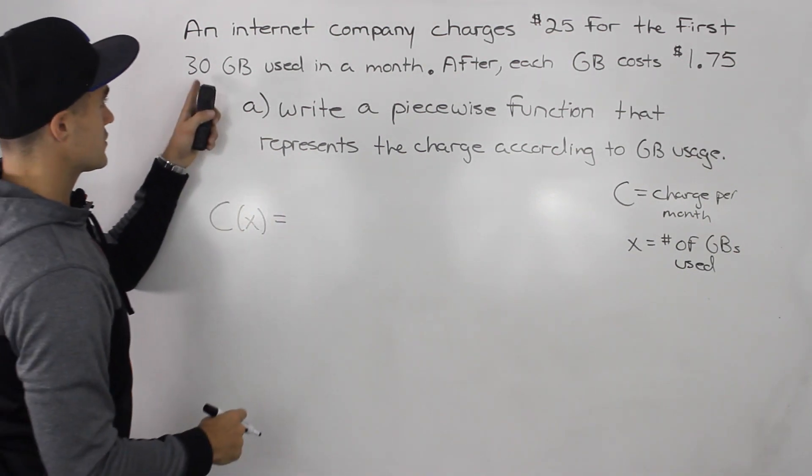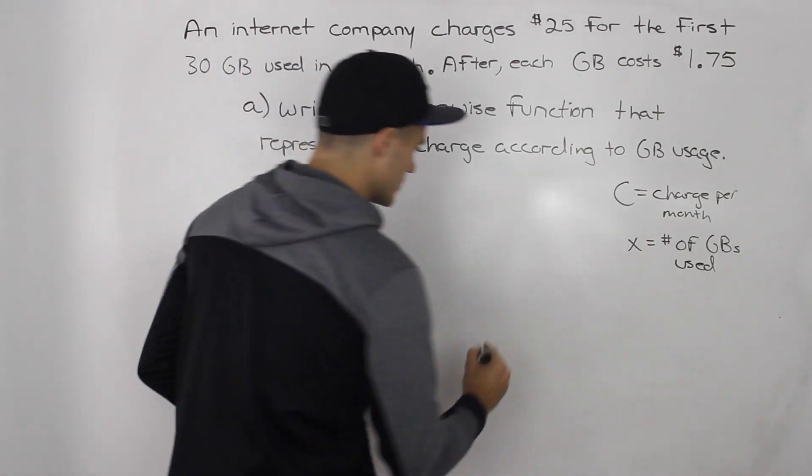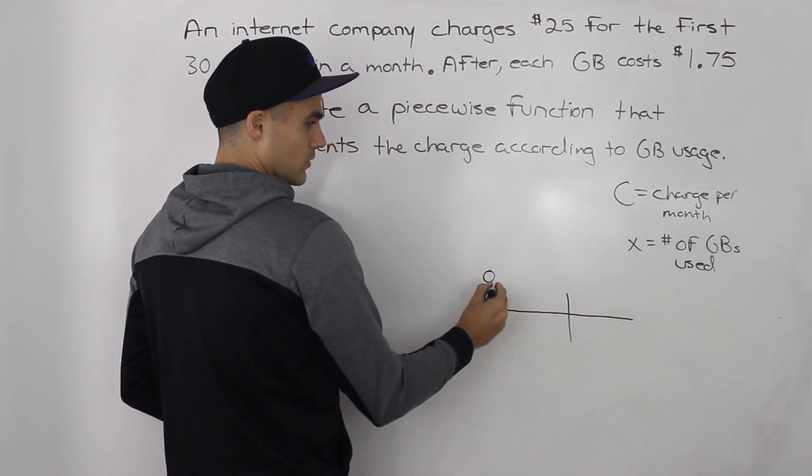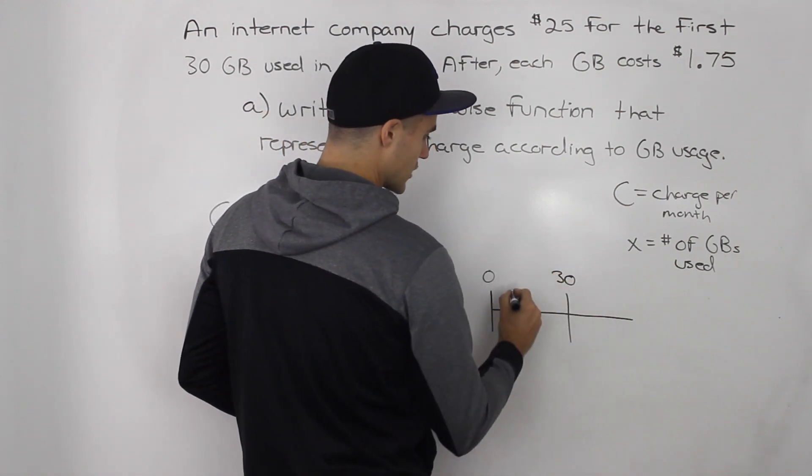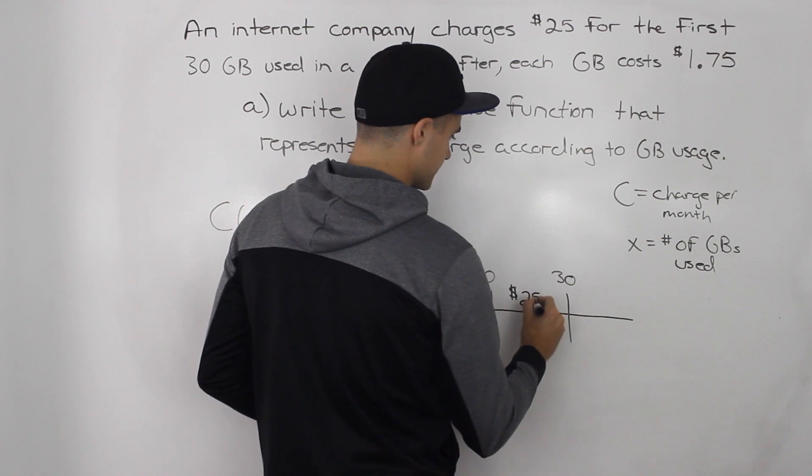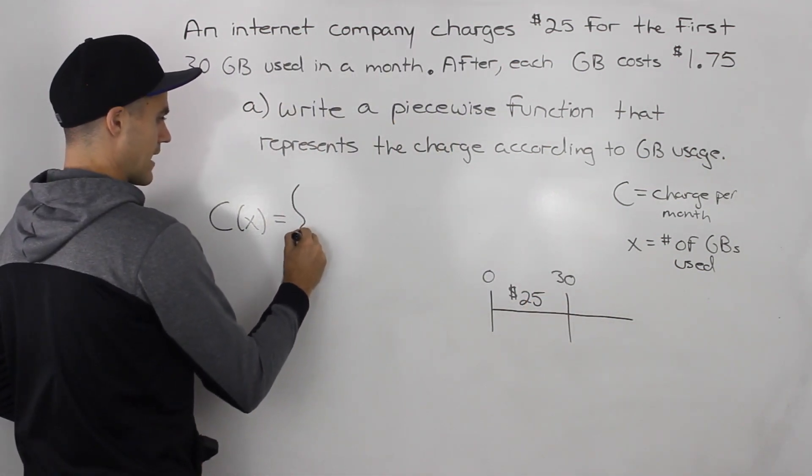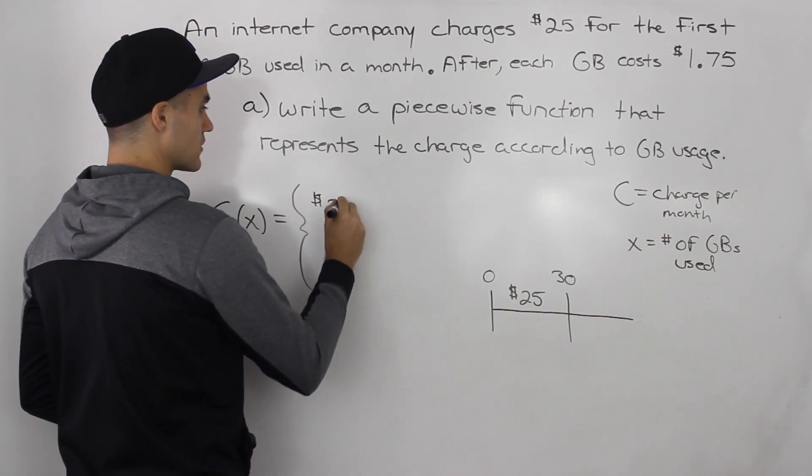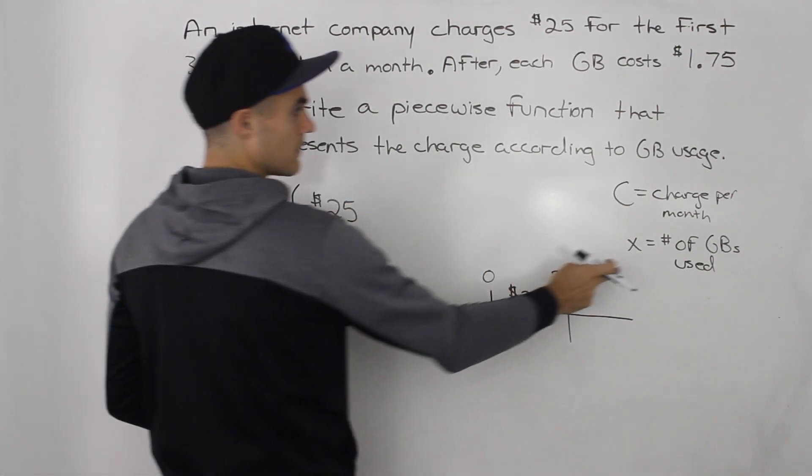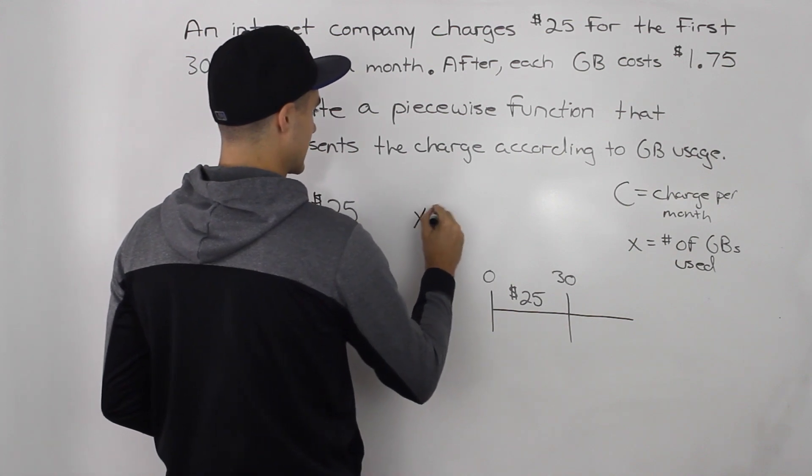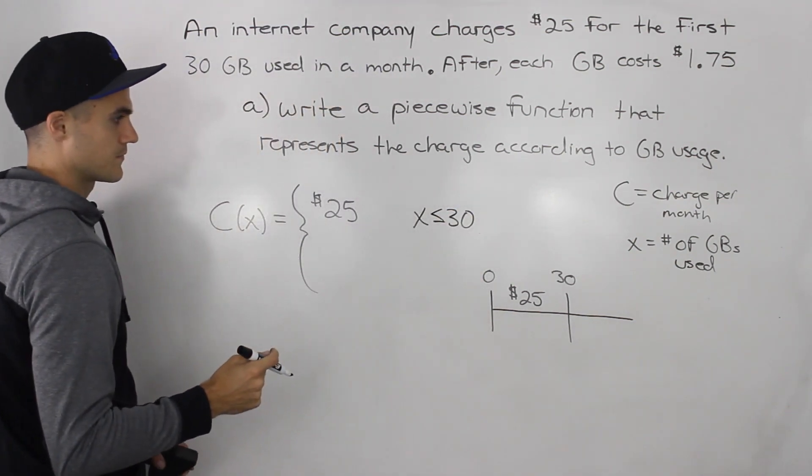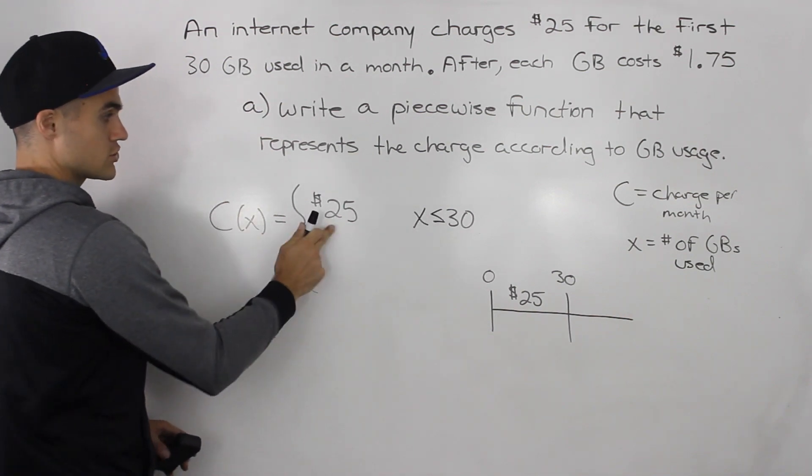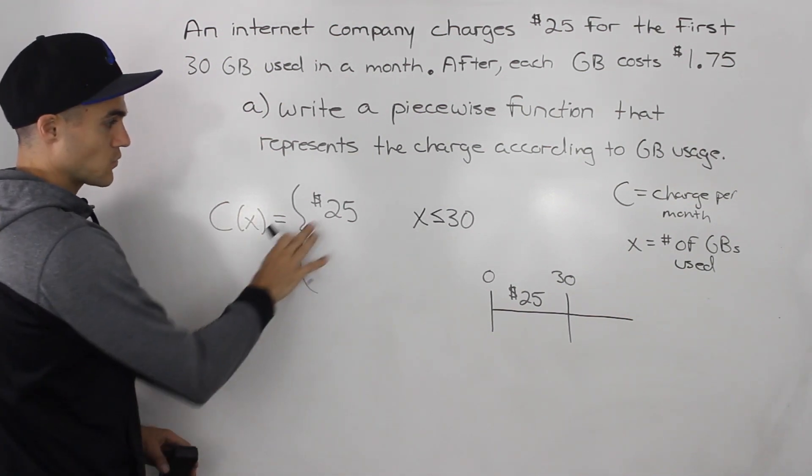Well, for the first 30 gigabytes, the charge is $25. So let's show this in sort of like a timeline. So from zero gigabytes to 30 gigabytes, you're getting charged what? $25. Right? So we can represent that as one of the pieces in this function. So we're getting charged $25 if your usage is less than or equal to 30. Does that make sense? So if you're using 30 or less gigabytes, your charge is going to be $25. Okay, so that's one piece of the function.